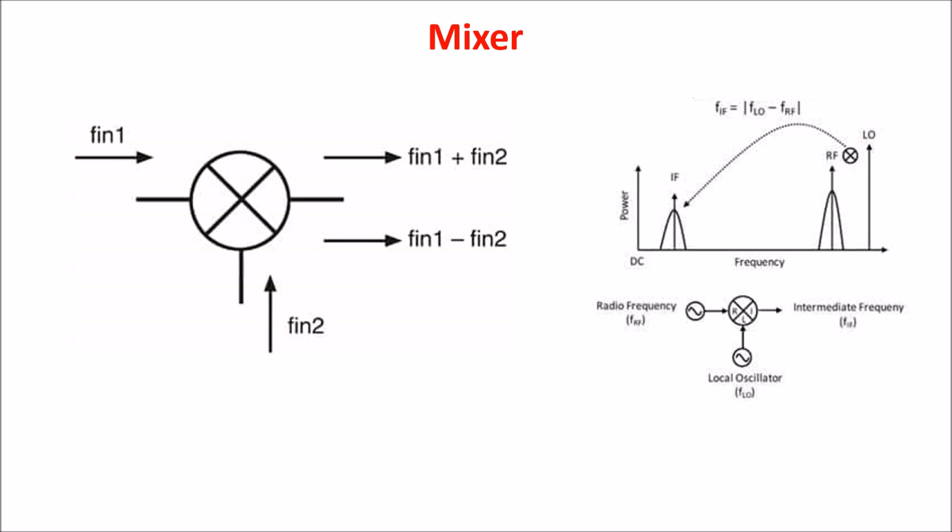You need to multiply the RF signal with the local oscillator LO signal because this product generates a translation of the frequency, the IF signal, which then can be filtered and processed. The basic operation is an analog multiplication and this can be very well obtained with the Gilbert cell.